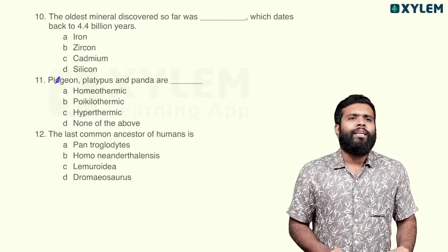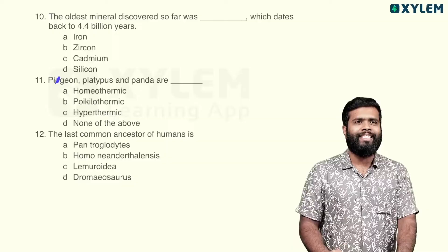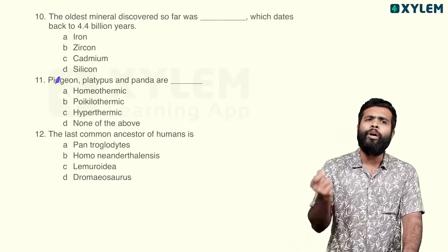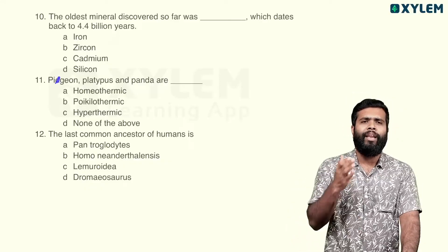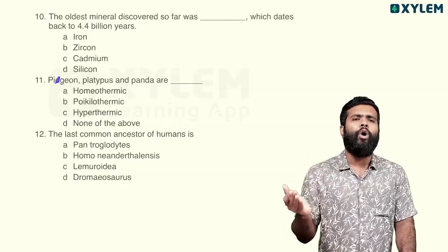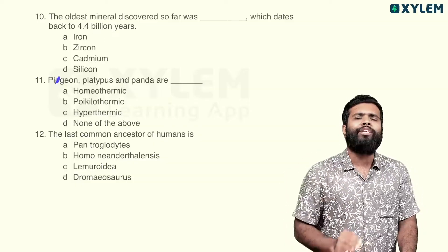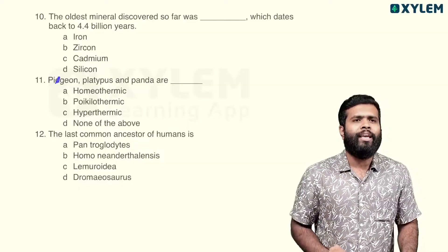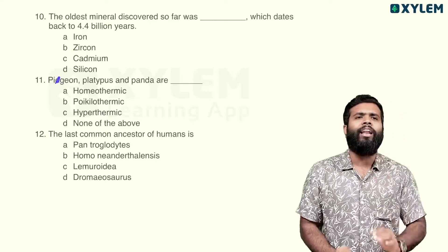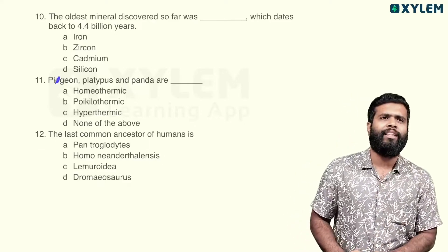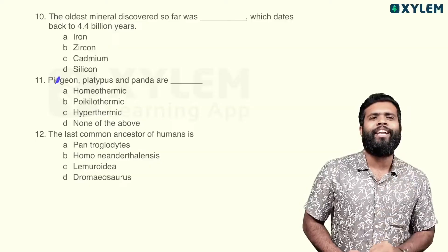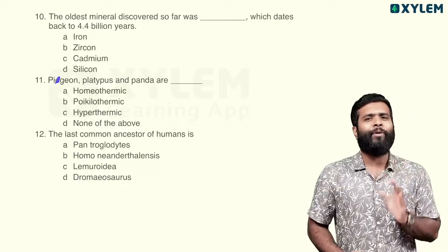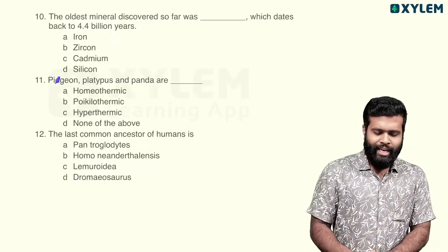Question 12: the last common ancestor of humans is. We are looking at Ramapithecus, homo sapiens, and Pan troglodytes as we consider the last common ancestor.